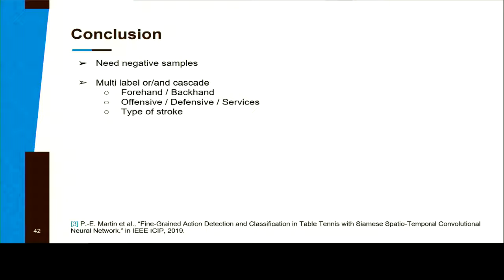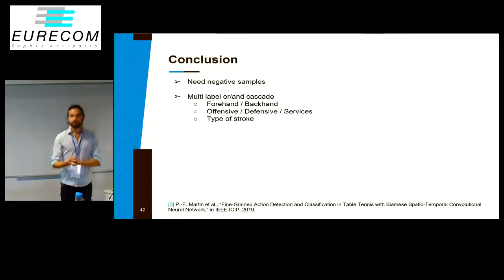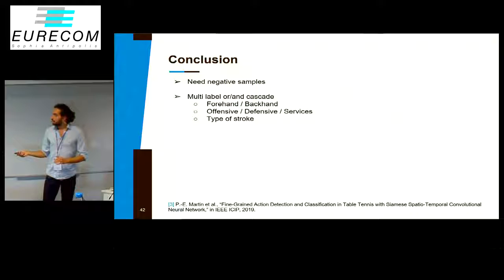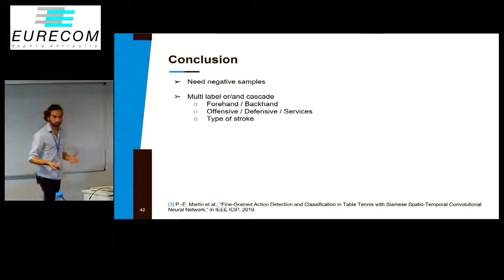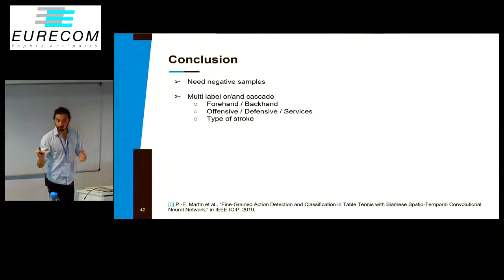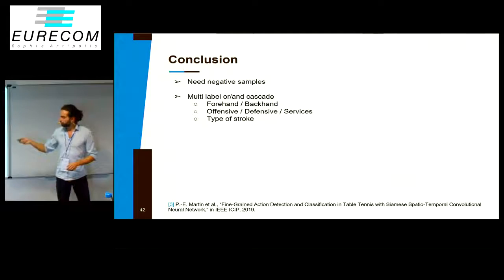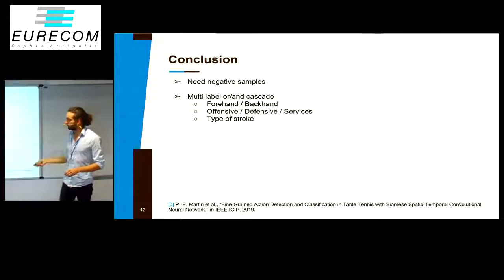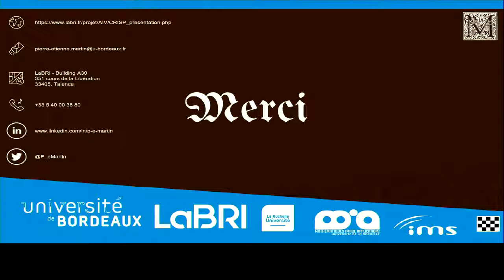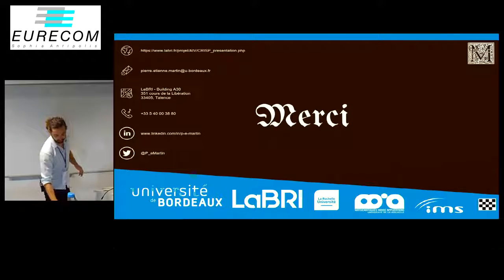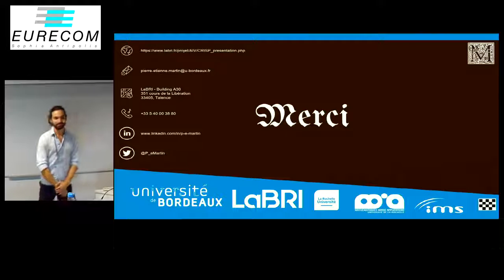So the conclusion is kind of the same as before: we need negative samples to avoid overfitting, and those negative samples can be built from the annotations by taking samples between the other annotations. As I said before, multi-label or cascade would be very interesting. Thank you again. I tried to do it as fast as possible to manage the gap. Thank you.